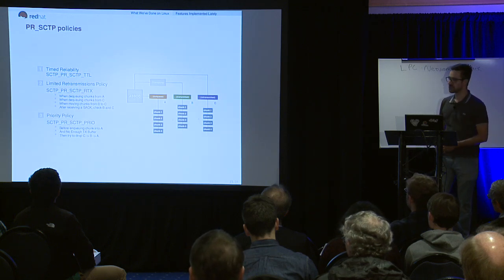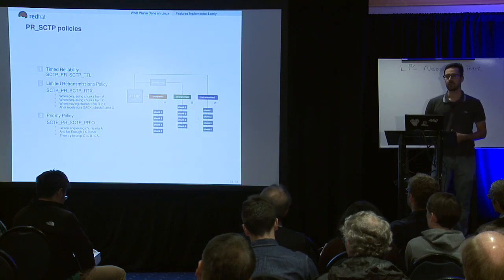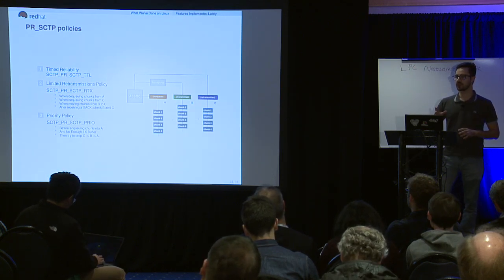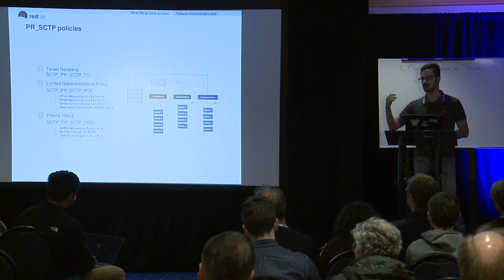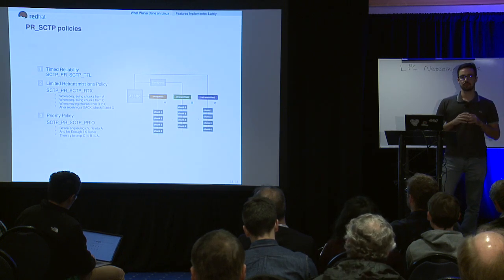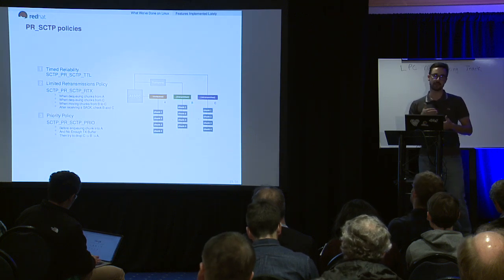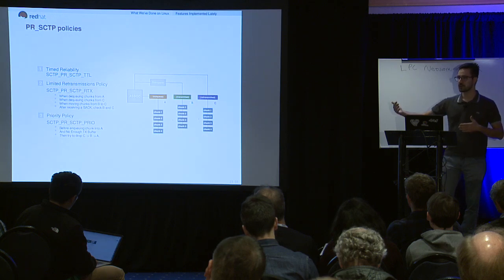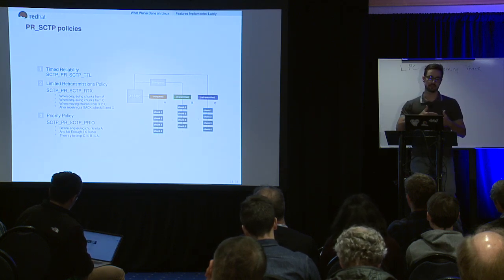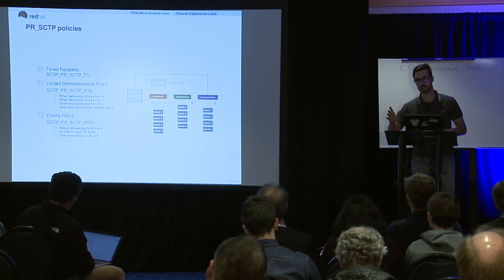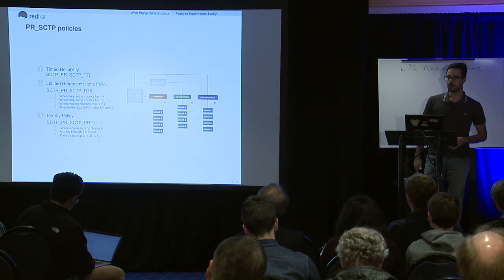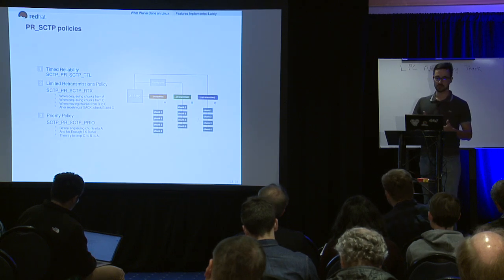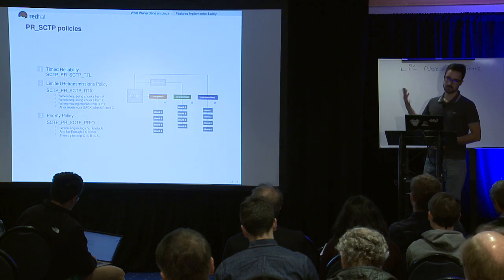The additional partial reliability policies: Time-to-live — you tell the stack that for a given association those messages should expire after 100 milliseconds. You queue messages as needed, but if there's congestion, packet drops, or whatever, and the message doesn't get delivered within 100 milliseconds, that message gets dropped and the next one, if not expired, gets sent. SCTP handles this expiring for you — the application just needs to inform and move on. It's handy because the application doesn't have to control send buffer queuing itself. The limited retransmissions policy limits how many times a message is retransmitted.